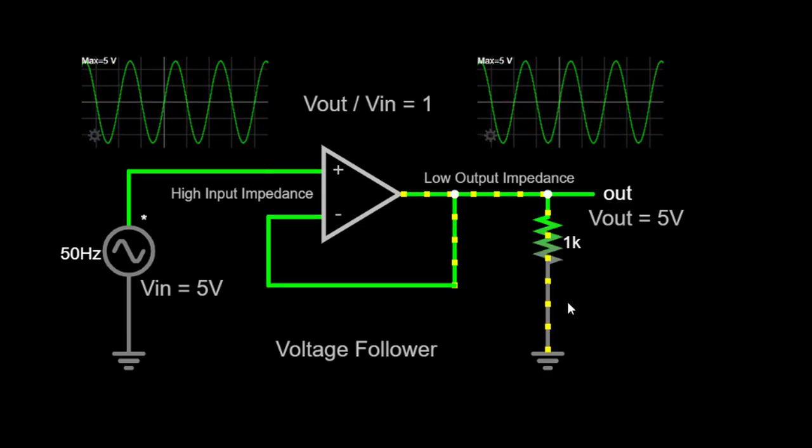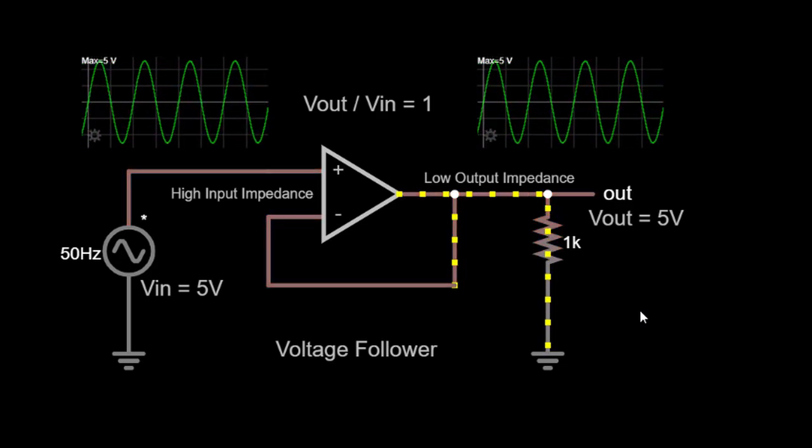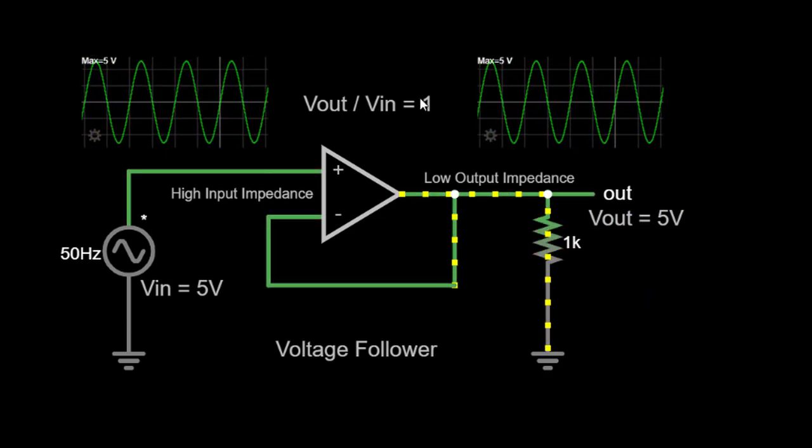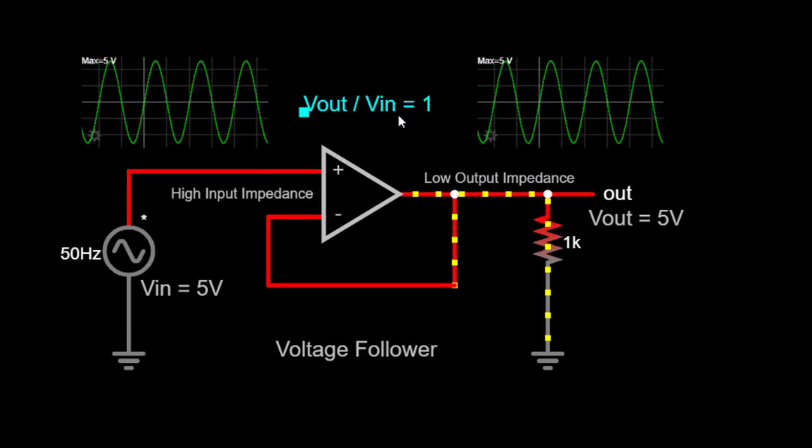When the input voltage is applied, it is fed to the non-inverting terminal of the op-amp. The op-amp amplifies the voltage but with a gain of unity, meaning the output voltage will be the same as the input voltage.